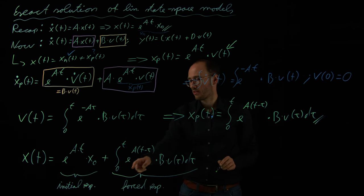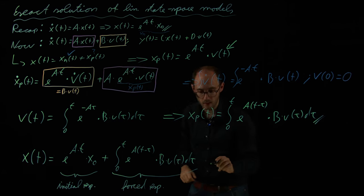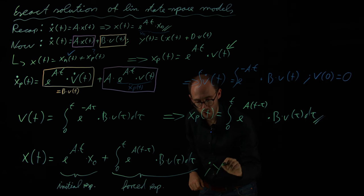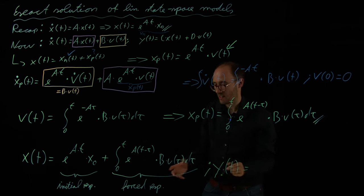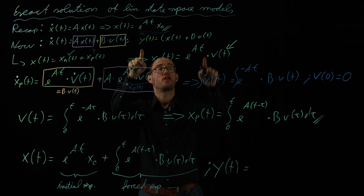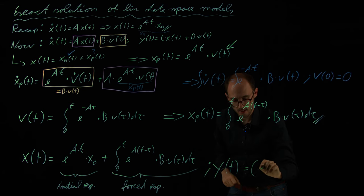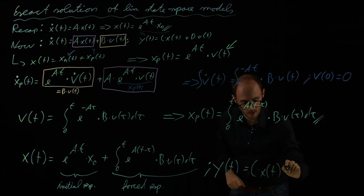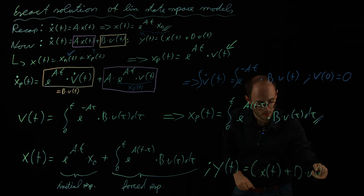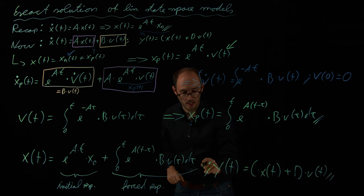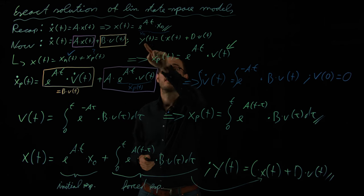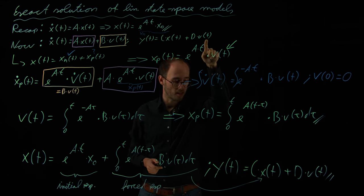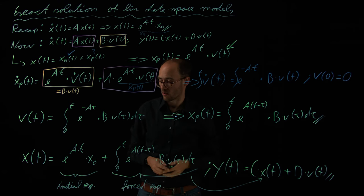This solves x(t), our state. But formally we also need to consider the measurement y(t) — the observables which we can measure at the outside of the system. This is obtained simply by inserting our solution for x(t) into the measurement equation: y(t) = C times x(t) plus D times u(t). Since the measurement equation is an algebraic equation, we just insert x(t) here and do not need to calculate anything further.